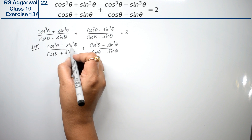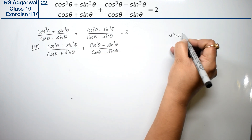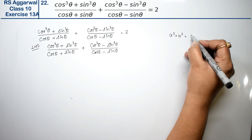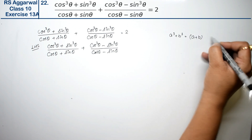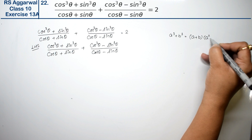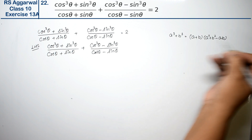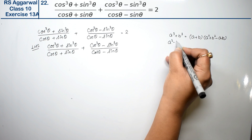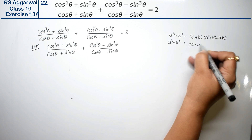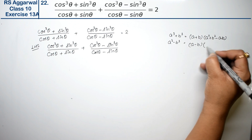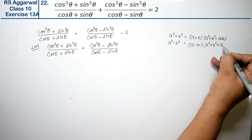Now let's recall the cube formulas. The a³ + b³ formula is: (a + b)(a² + b² - ab). And the a³ - b³ formula is: (a - b)(a² + b² + ab).